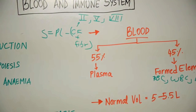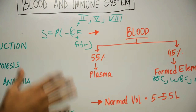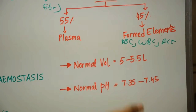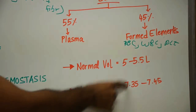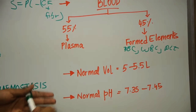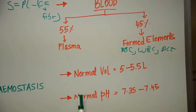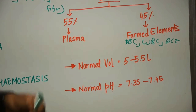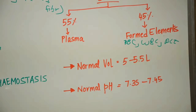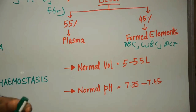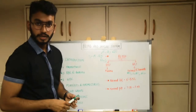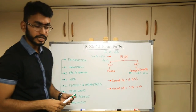The normal volume of blood in an adult weighing about 70 to 80 kilograms is about 5 to 5.5 liters. The normal pH of blood is 7.35 to 7.45. If it goes below 7.35, the person is suffering from acidosis; if it goes above 7.45, the person is suffering from alkalosis. That covers the introduction of blood.